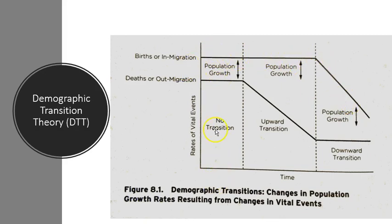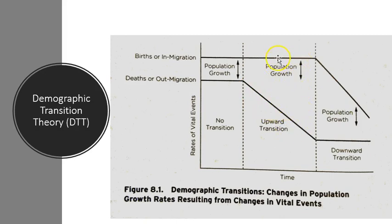In stage one, which characterized hunting and gathering times for human beings, there was a high birth rate but a high death rate to offset it. As a result, population growth was always kept in check. Population exploded when the epidemiological transition started to come into play, as many of the main causes of death were starting to be addressed. Food was becoming more plentiful and diseases were being eradicated, largely because of improvements in medicine but also in terms of sanitation. It's during that time that the population began to explode — we call that stage two.